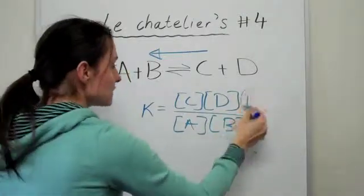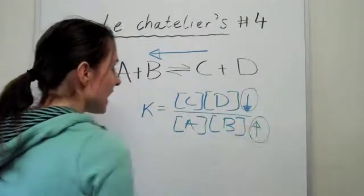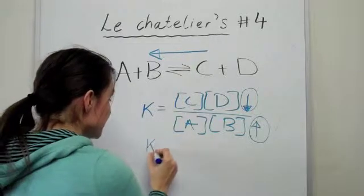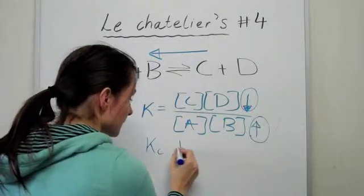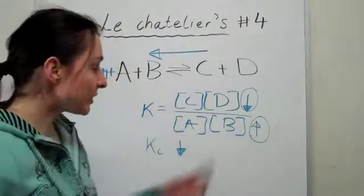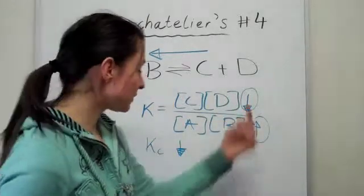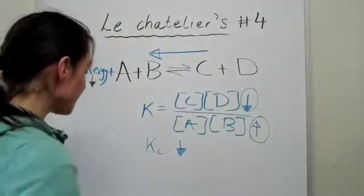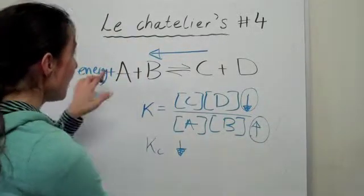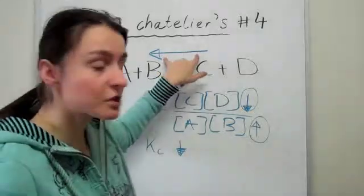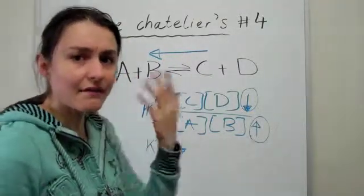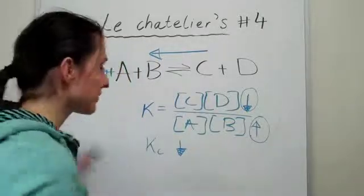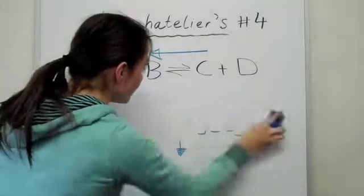So in this case, because it's gone down and this has gone up, the KC value decreases, because the top number decreases and the bottom number increases. So you can practically work out how the equilibrium shifts and you can also work out how it changes your K value without having to memorize formulas or anything like that, just by pure understanding.